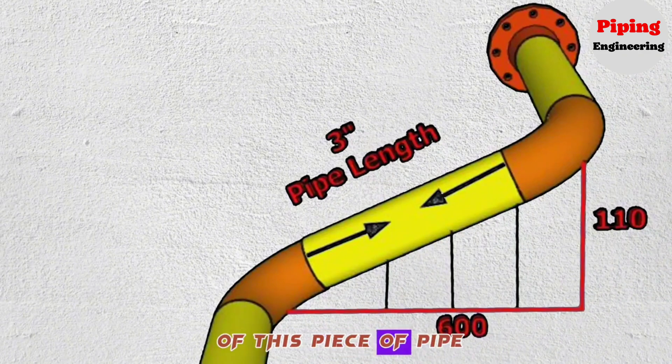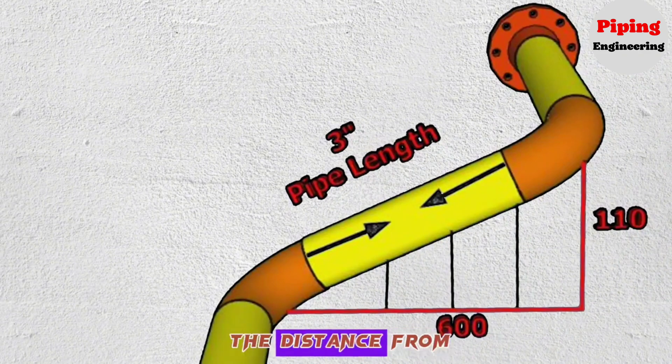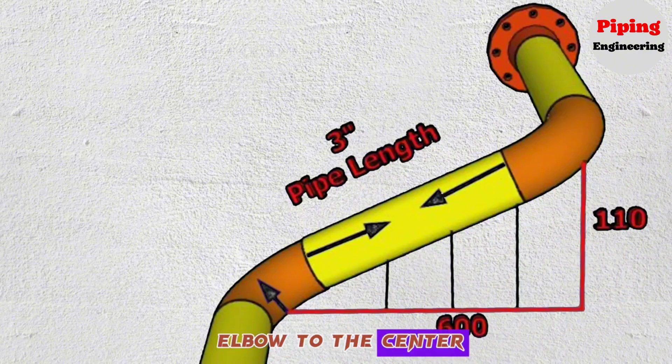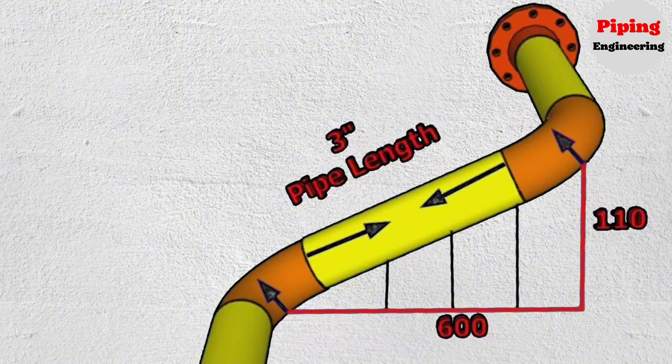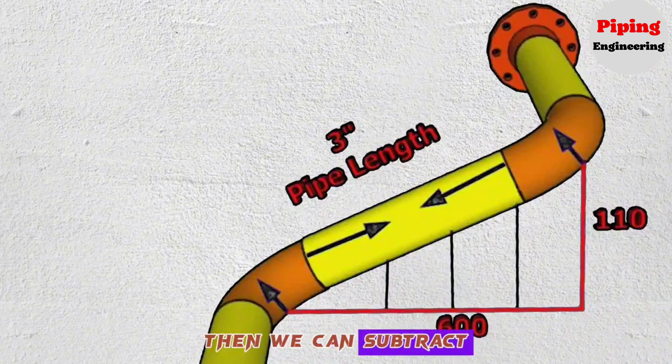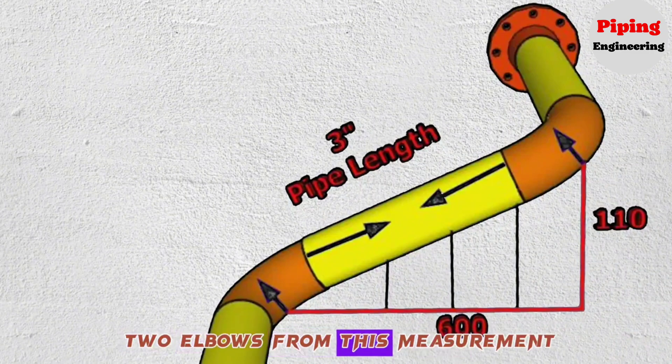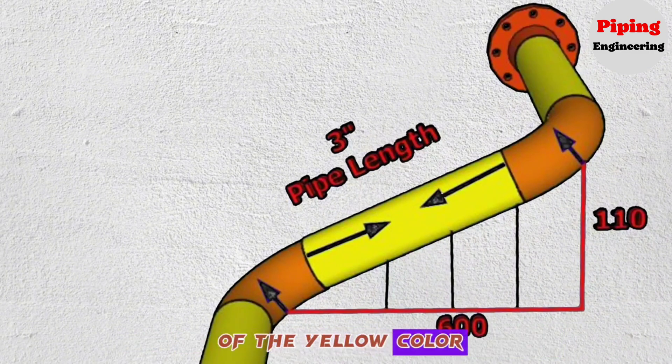To find the length of this piece of pipe, we will first find the distance from the center of this elbow to the center of this elbow. Then we can subtract the lengths of these two elbows from this measurement and find the length of the yellow color pipe piece.